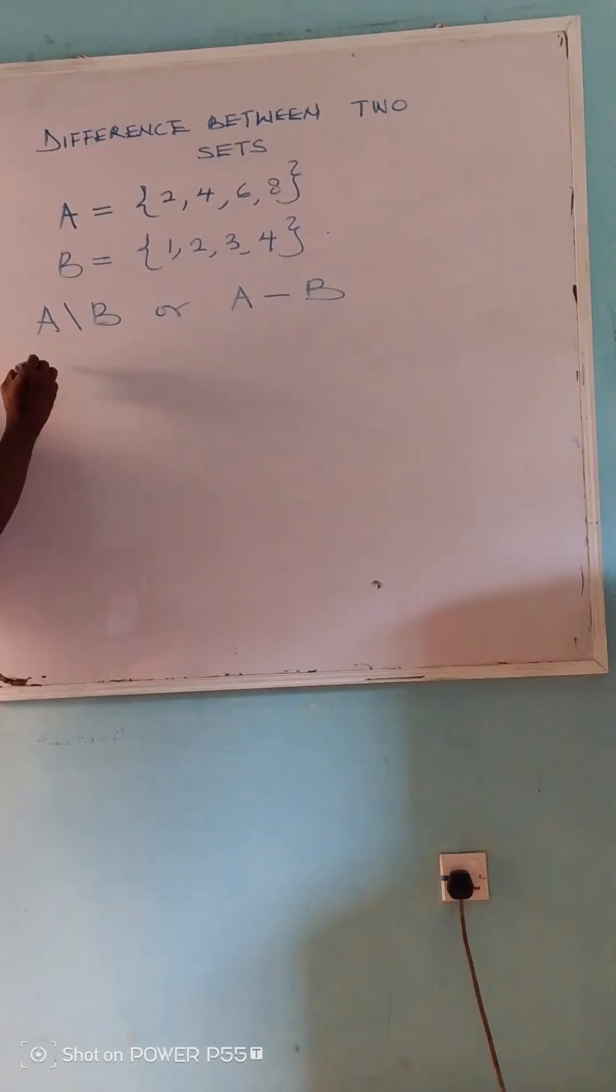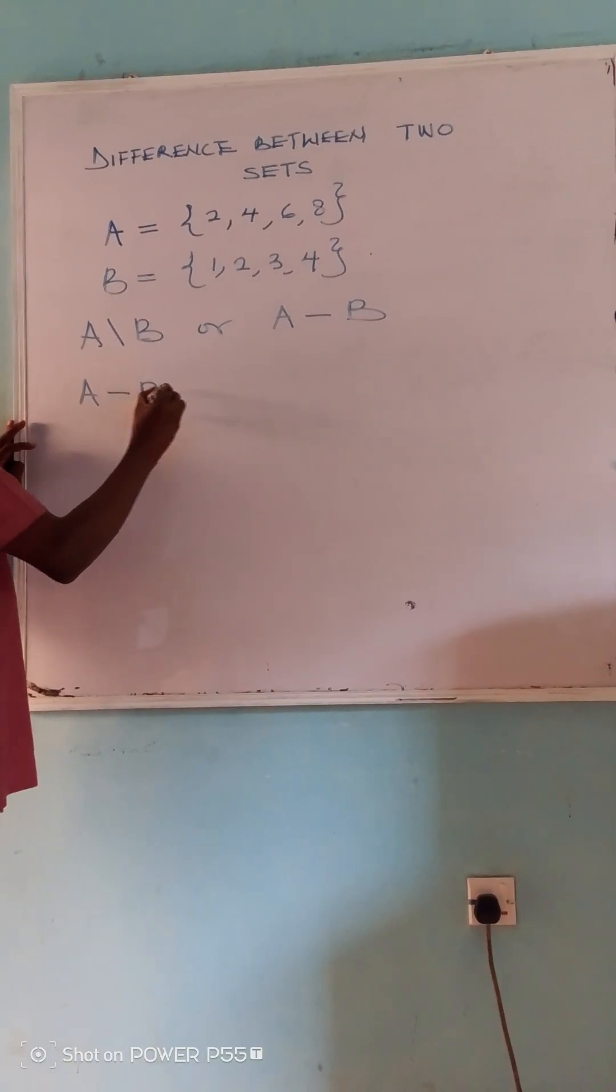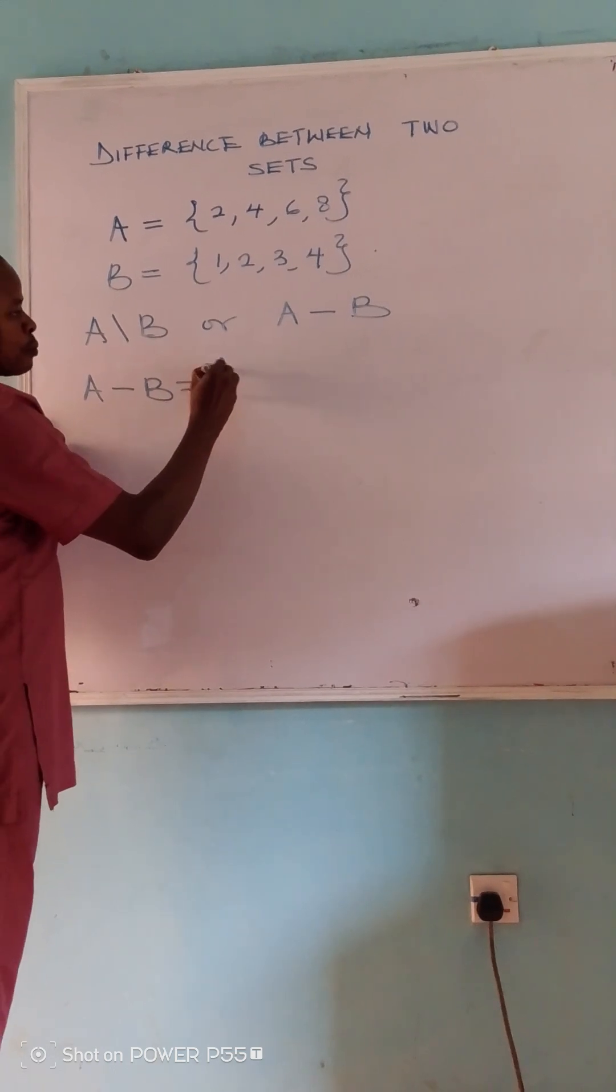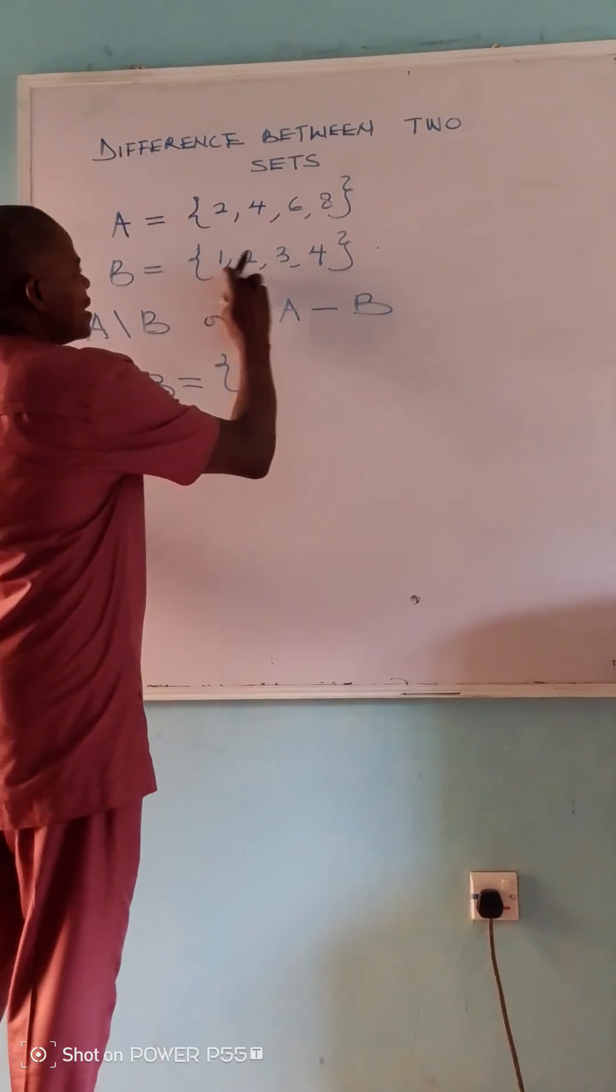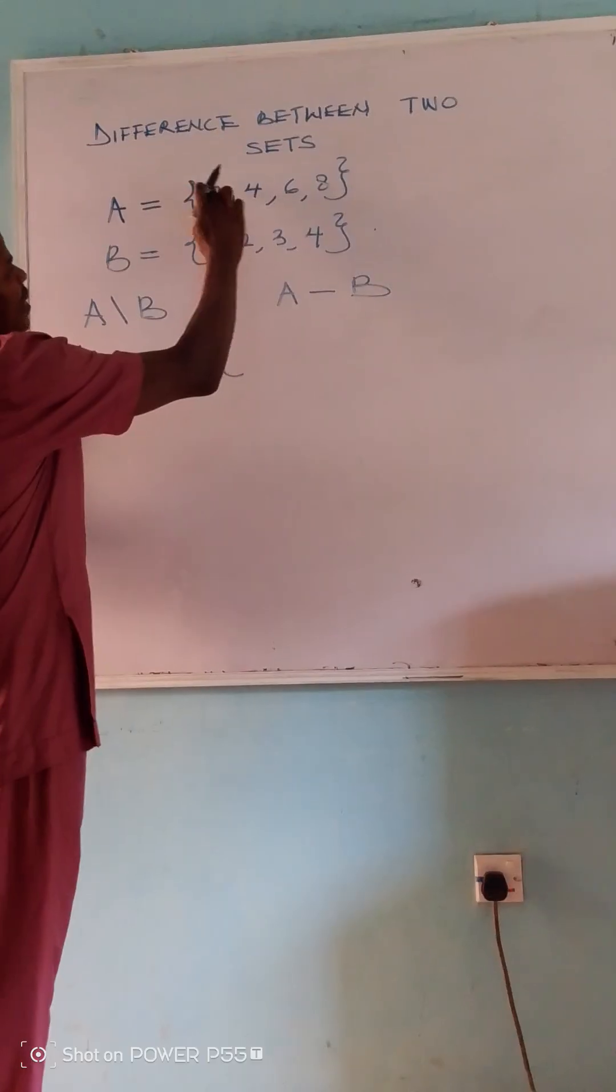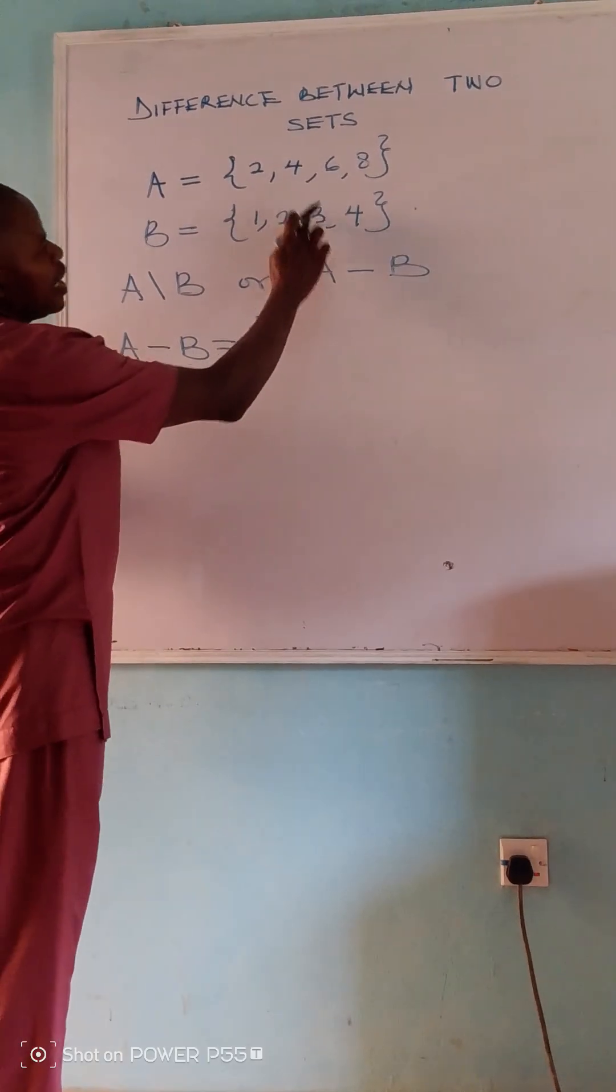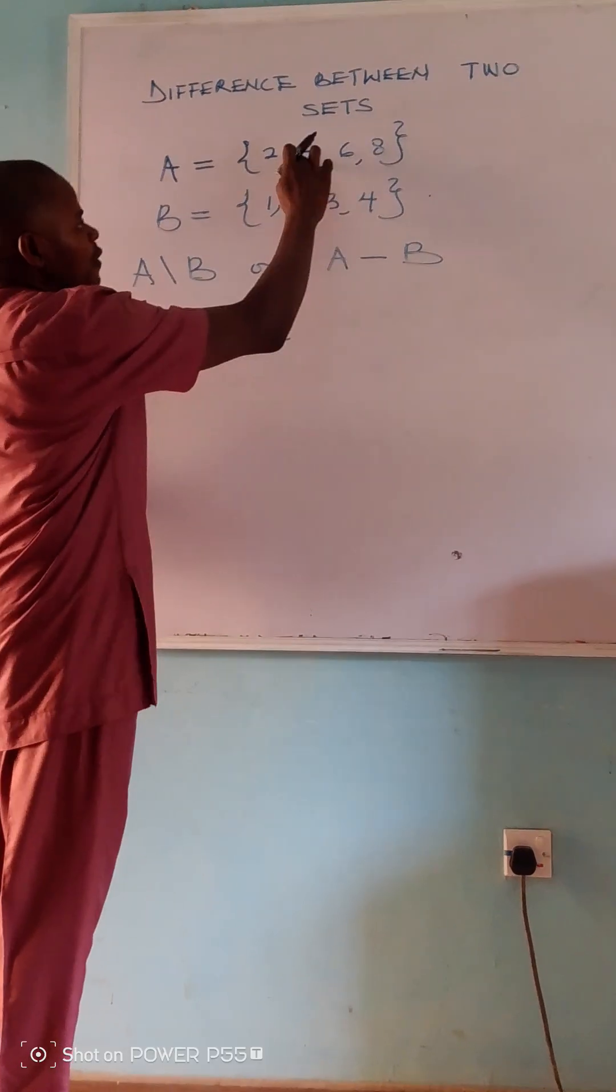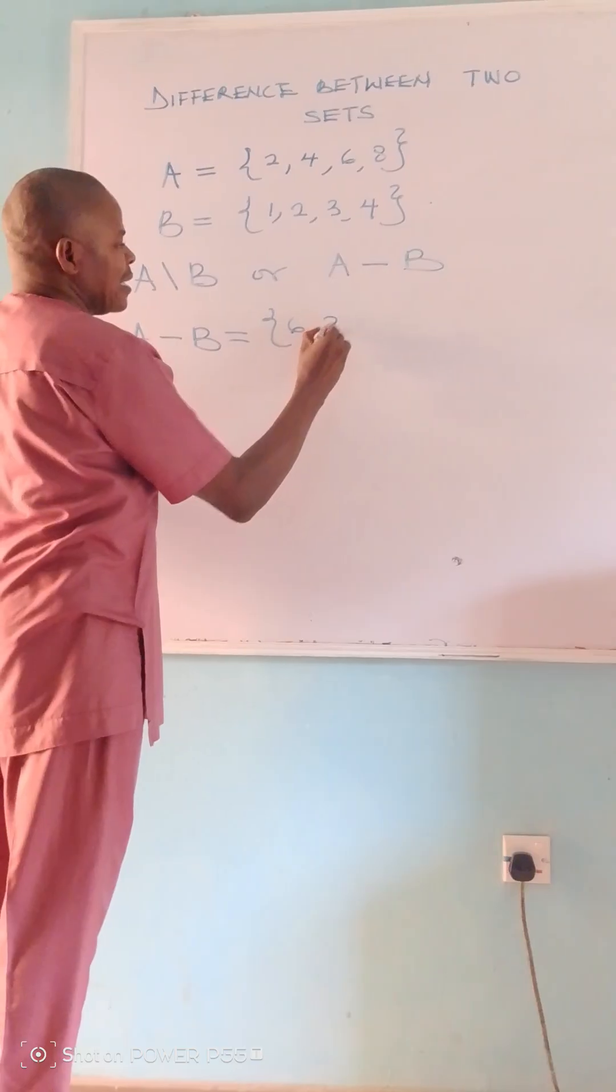To find difference between A and B, A minus B will be equal to removing B from A. I want to remove all elements that are in B from A. So I'll check: Is 1 there? No. Is 2 there? I'll remove the 2. Is 3 there? No. Is 4 there? I'll remove the 4. So what remains is {6, 8}.